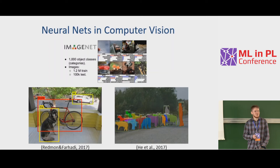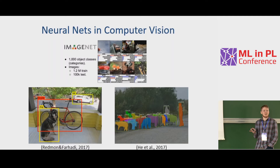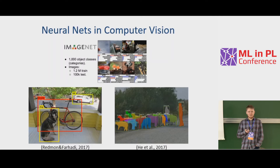That's very easy, because results speak for themselves. In many fields, neural networks are the state-of-the-art, and that's the reality we have to live in. For example, in computer vision, tasks such as image classification, object detection, and image segmentation are solved almost exclusively with neural networks today. If you want to build a system for one of these tasks without neural networks, you'd better have a very good reason to do that.